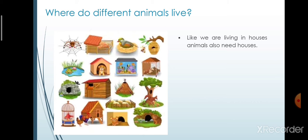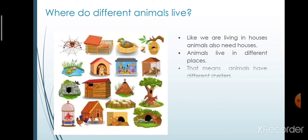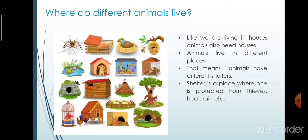Next, we will see where do different animals live. Like we are living in houses, animals also need houses. Different animals live in different places. That means animals have different shelters. Shelter is a place where one is protected from thieves, heat, rain, etc.